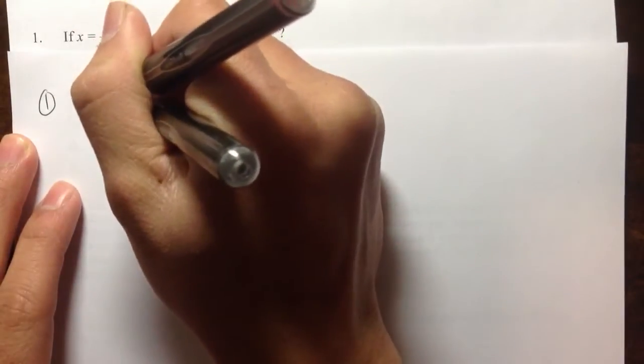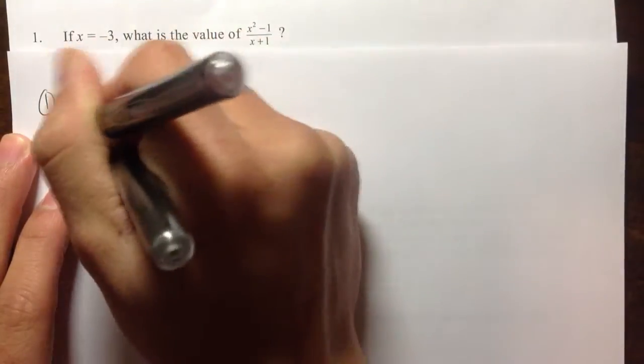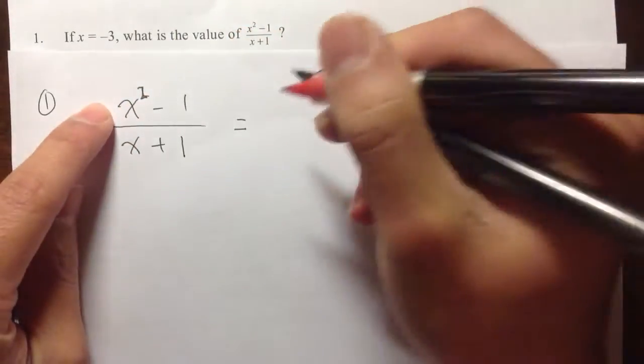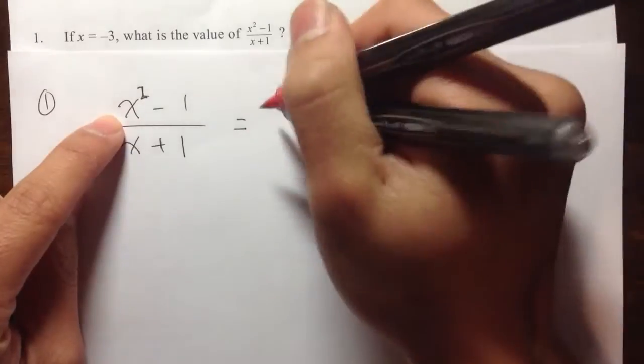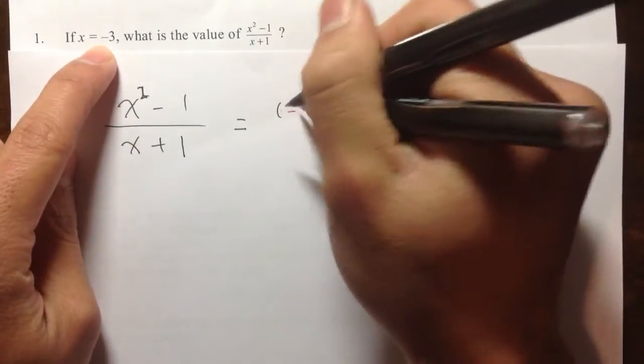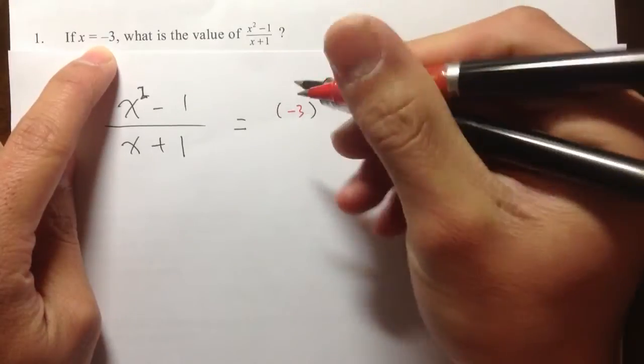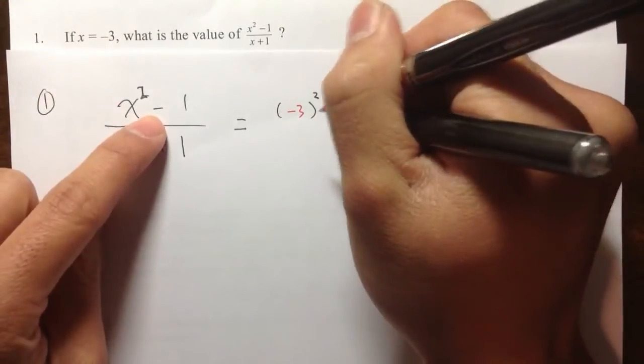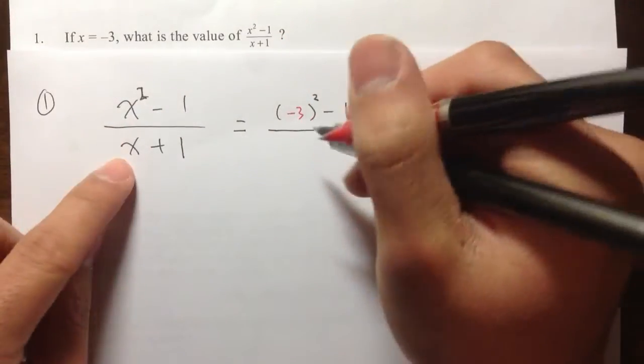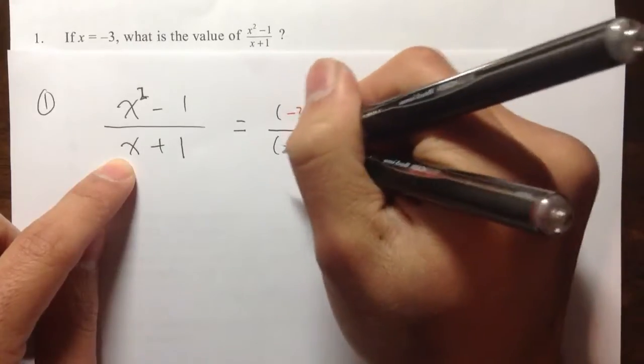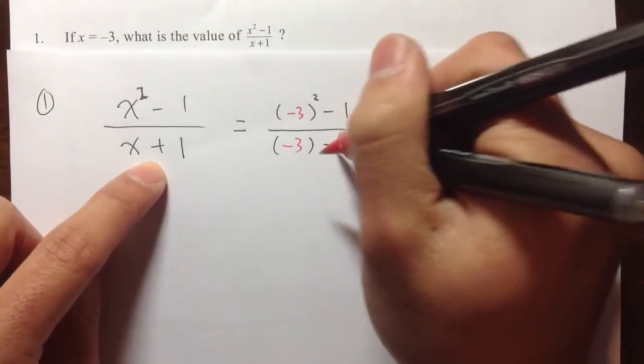So let's see what we get. So I have x squared minus 1 over x plus 1. So to plug in values, whenever you see x, I'm going to first write a parenthesis and then I'm going to put negative 3 inside of the parenthesis for the x value. And I still have the square and then minus 1 over. I see the x, let me use a parenthesis and then let me put negative 3 inside plus 1.